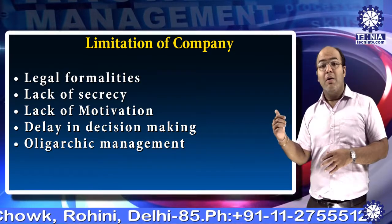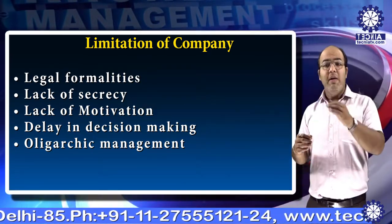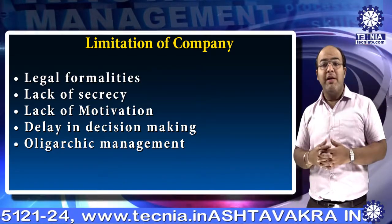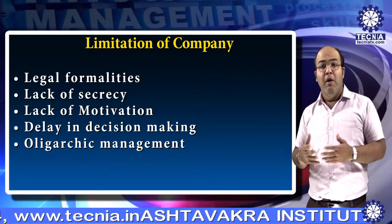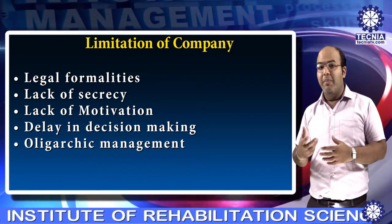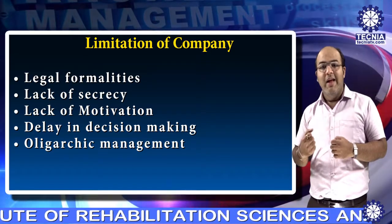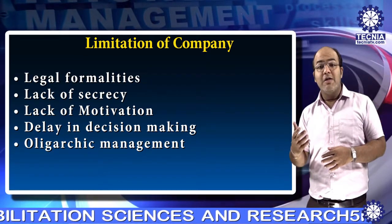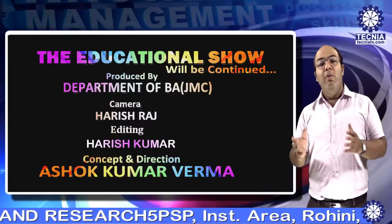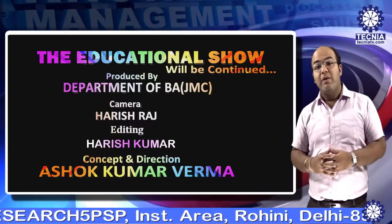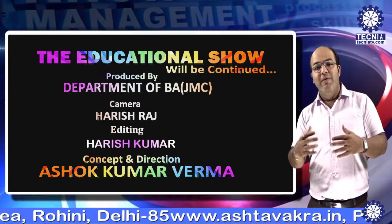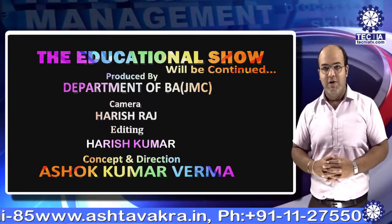Fifth, oligarchic management — a company is said to be democratically managed, but is actually managed by a few people: the board of directors. Sometimes they take decisions keeping in mind their personal interest and benefits, ignoring the interest of shareholders and the company. So I hope you understand the topic of company and its essential features. Thank you very much.